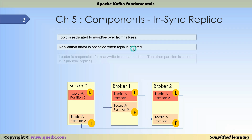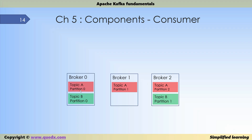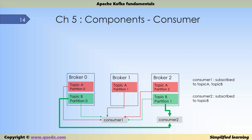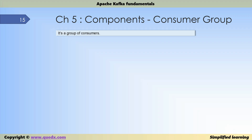Consider topic A spread across three partitions and topic B across two partitions, belonging to brokers 0, 1, and 2. Consumer 1 is subscribed to both topic A and topic B, so it reads data from both. Consumer 2 is subscribed only to topic B, so it reads from topic B partitions 0 and 1. A consumer is an application that reads data from brokers and can subscribe to one or more topics. A consumer group is a group of consumers.